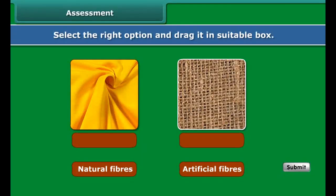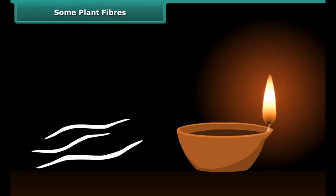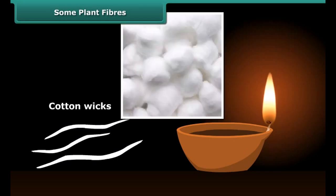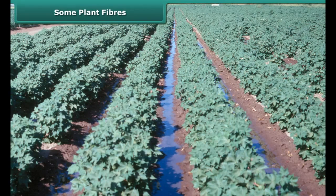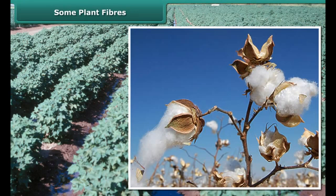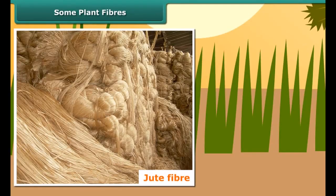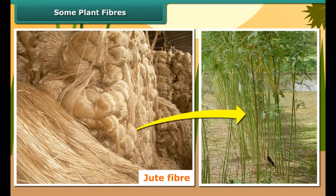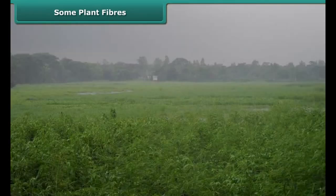Have you ever made wicks of earthen lamps during the Diwali festival? They are made up of cotton. This cotton is obtained from cotton plants, which are grown in places having black soil and a warm climate. The fruits of the cotton plant, after maturing, burst open and seed-covered cotton is obtained.